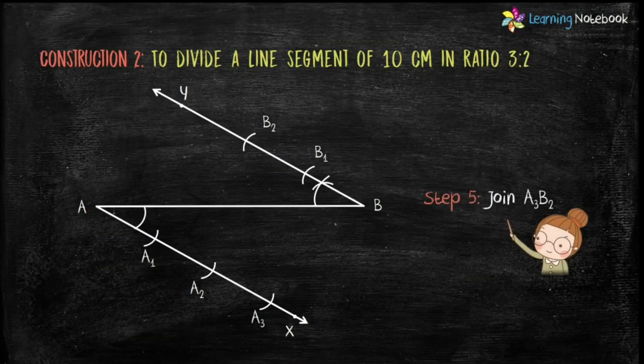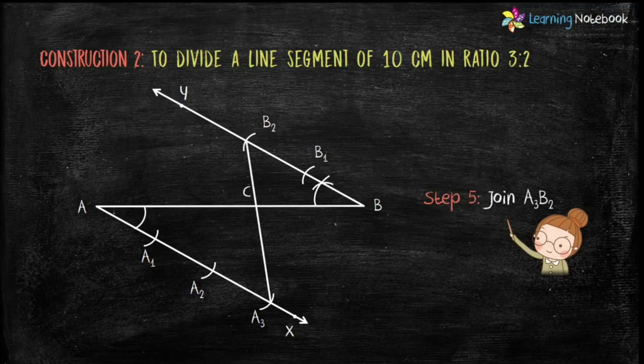Step 5 is to join A3, B2. This line cuts AB at a point. Let's name this point as C.